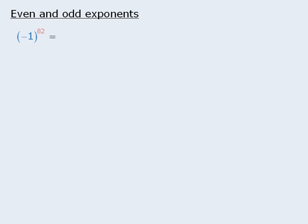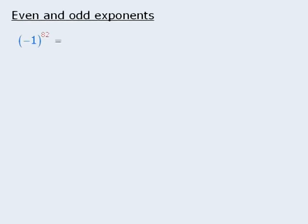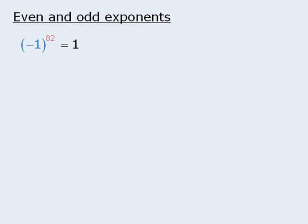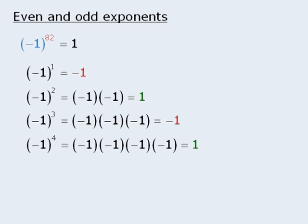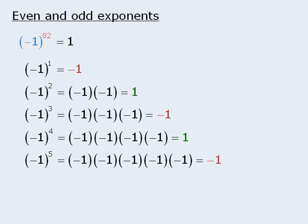The next property concerns even and odd exponents. What is the value of negative 1 to the power of 82? If you said 1, you're right. Notice that negative 1 to the power of 1 equals negative 1, to the power of 2 equals 1, to the power of 3 equals negative 1, and to the power of 4 equals 1. When the exponent is odd, the expression evaluates to negative 1; when the exponent is even, it evaluates to positive 1.